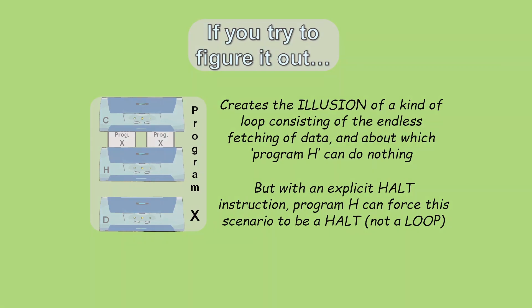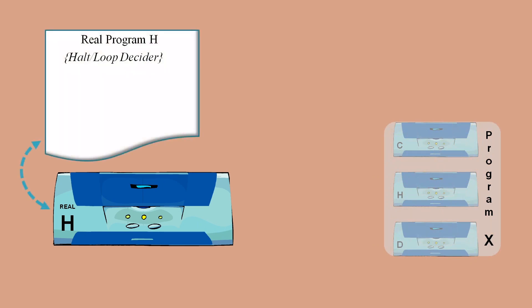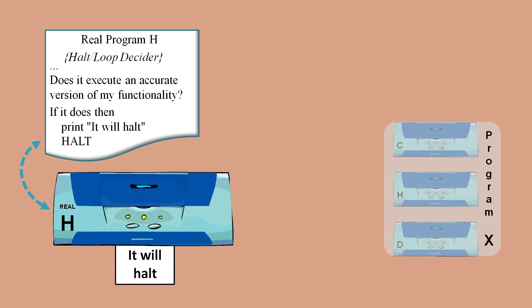Let's say this program H with the machine level halt does actually exist, and we call this program the real H. Next, let's say program X exists, and we'll consider what logic needs to be inside program H in order to avoid getting trapped by program X. At some point in the code, program H might ask the question: Does it try to execute an exact copy of my functionality? And if it does, then program X could print out 'it will halt' and then do a machine level halt.